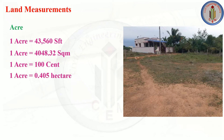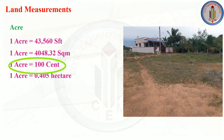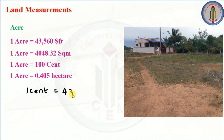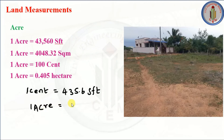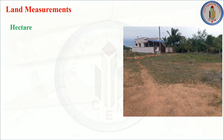1 acre = 43,560 sq feet, 4048.32 sq meters, 100 cents, and 0.405 hectares. You don't need to remember all these; just remember 1 acre = 100 cents. Since 1 cent = 435.6 sq feet, 1 acre = 100 × 435.6 = 43,560 sq feet.